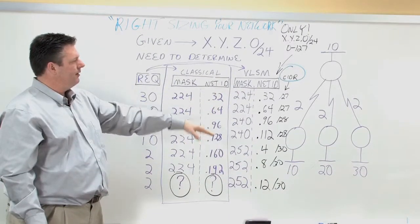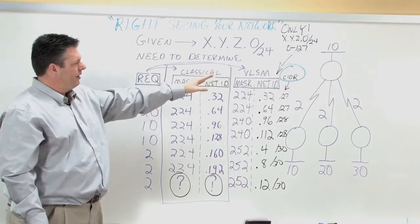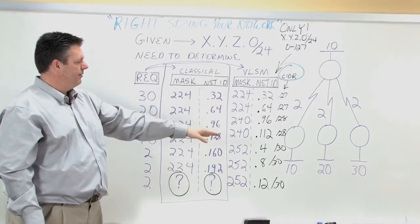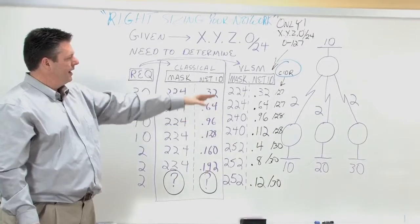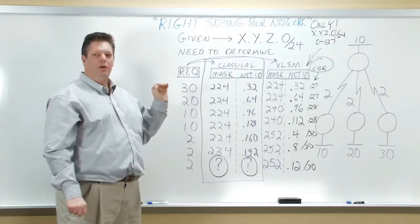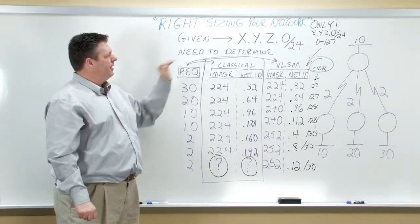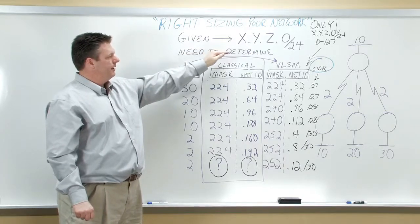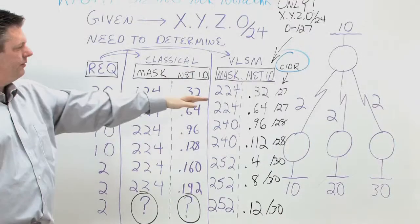four routers and seven networks. These networks vary in size from 30, 20, 10, and two hosts. What we need to do, or as a goal, is to be able to take a network prefix and apply a solution to this